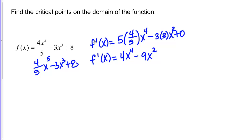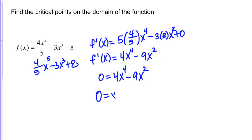Next, I want to think about the places where the derivative equals 0. To do that, I need to solve 0 = 4x⁴ minus 9x². It's going to be helpful to start by factoring out an x squared, giving 0 = x²(4x² − 9).